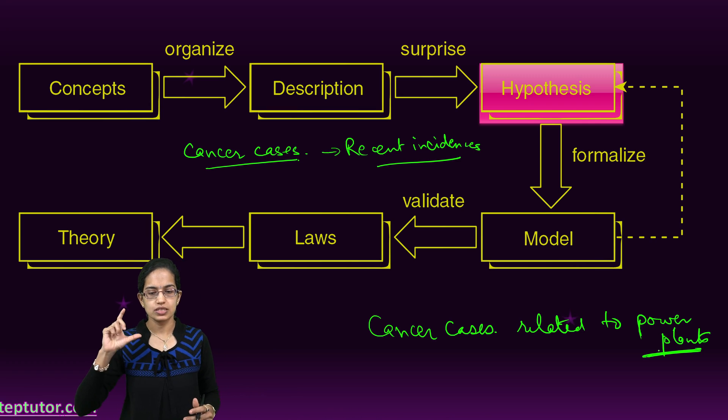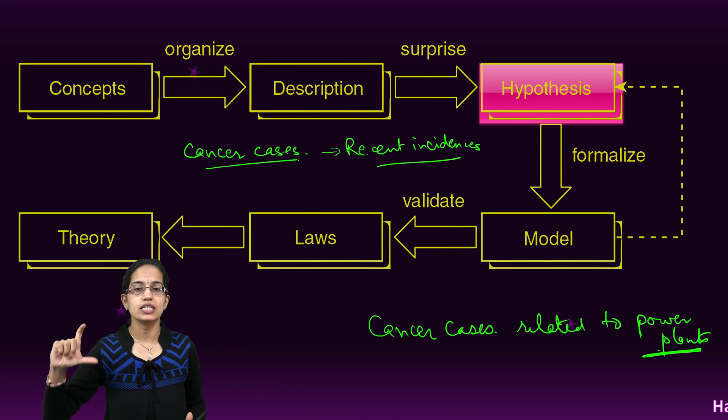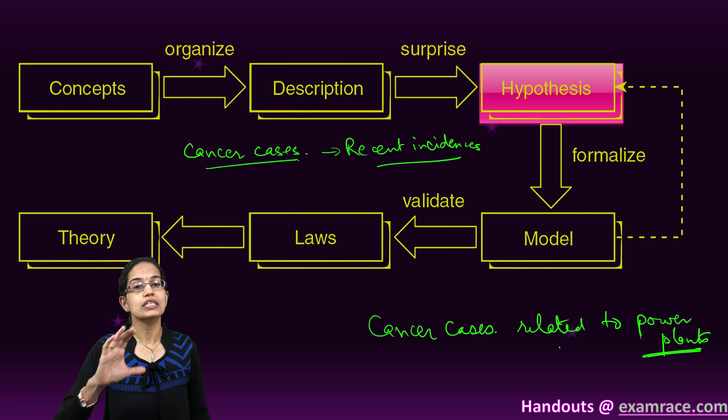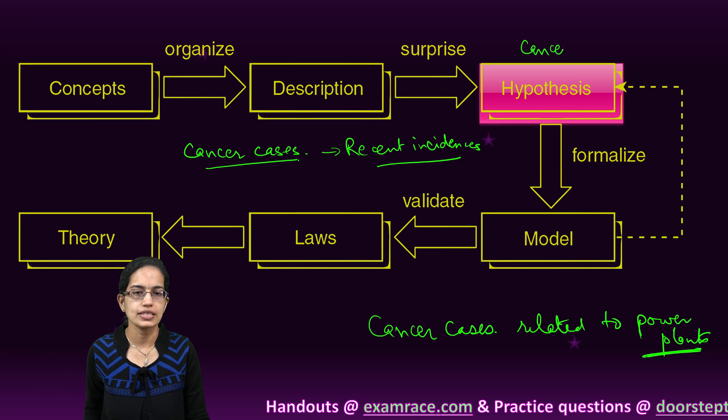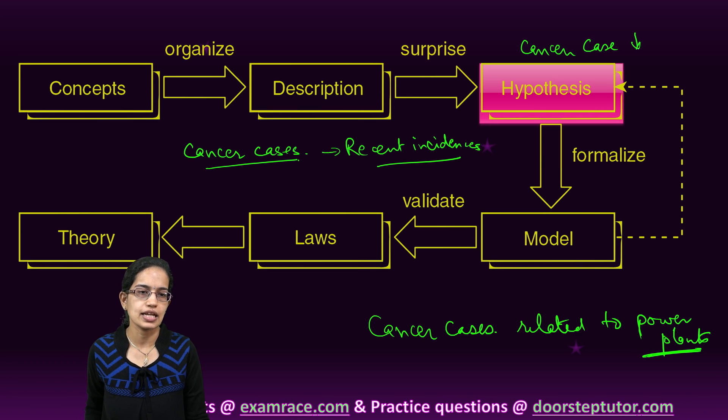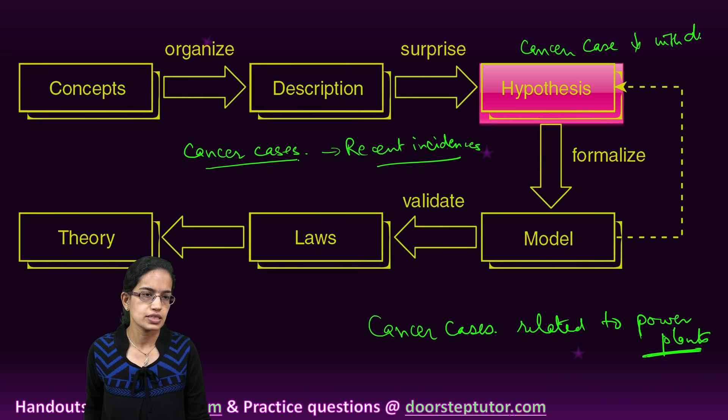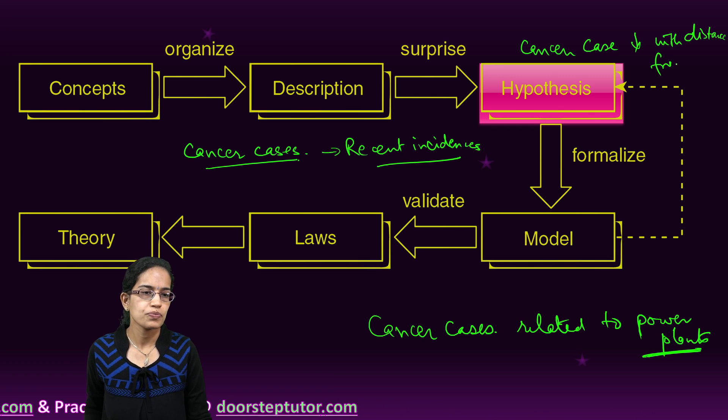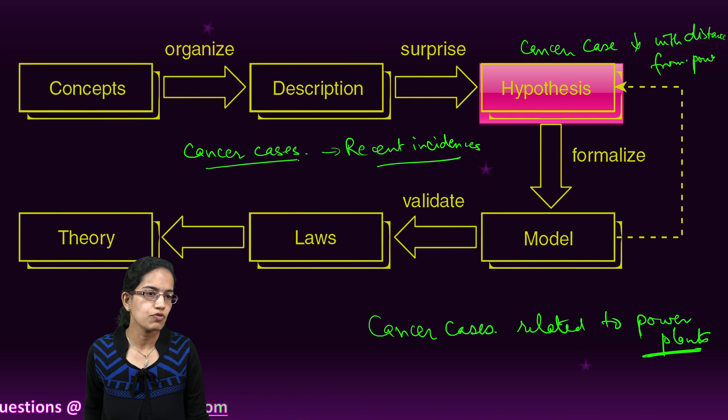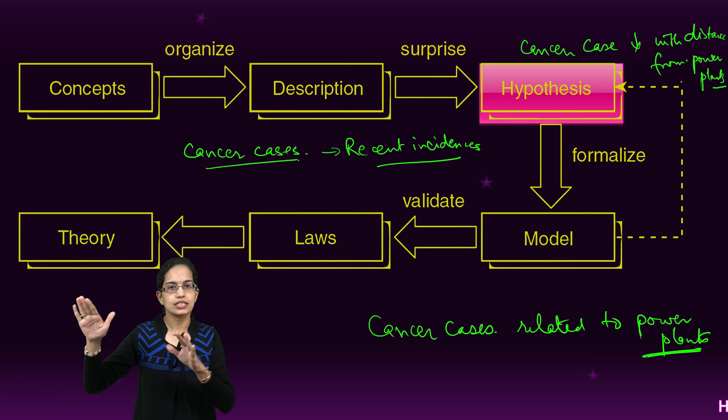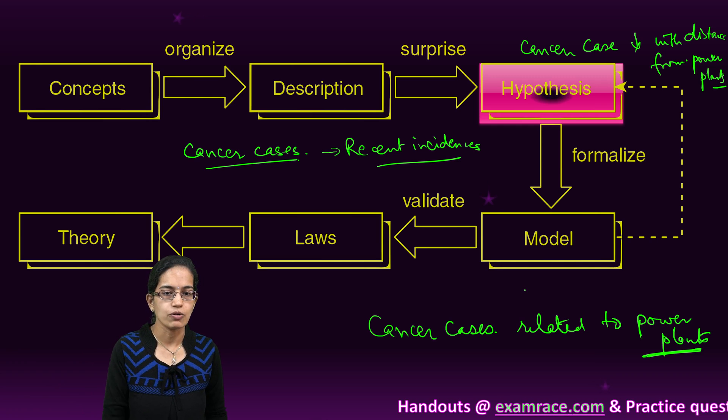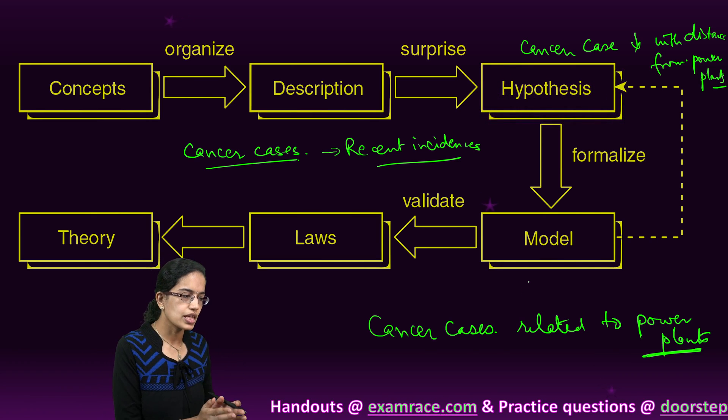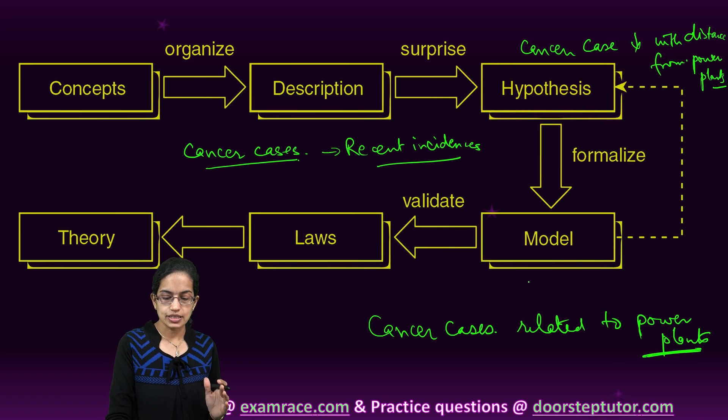This hypothesis that I have created says the cancer cases decline with the distance from the power plant. As far I am from the power plant, the probability of getting cancer cases would reduce. This is a hypothesis that has been laid down. This hypothesis is then formalized into a model.